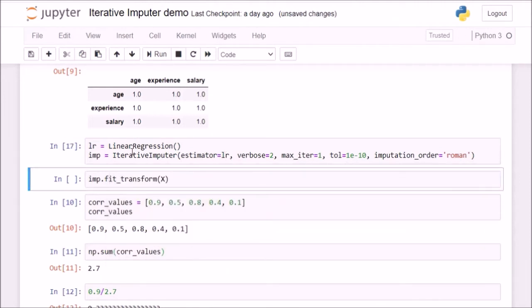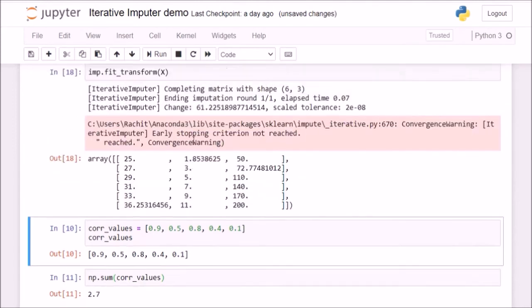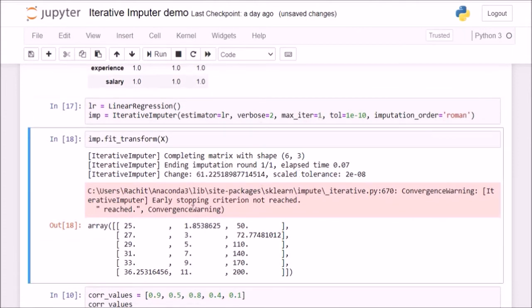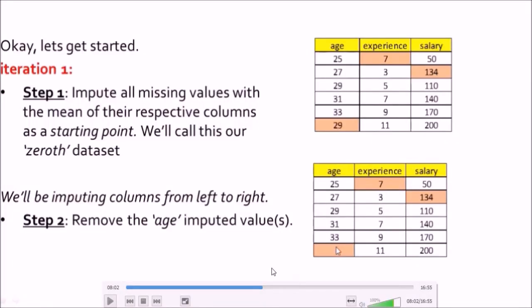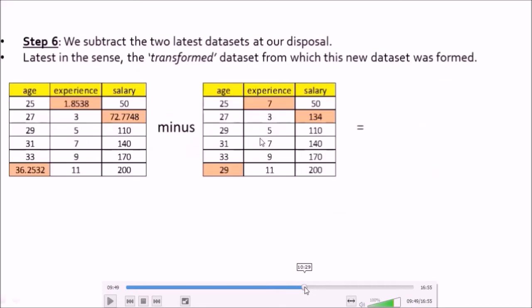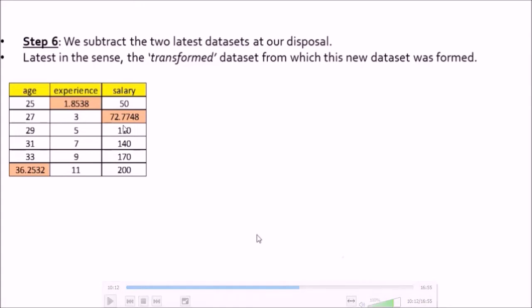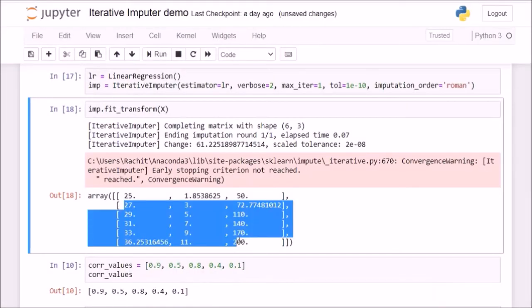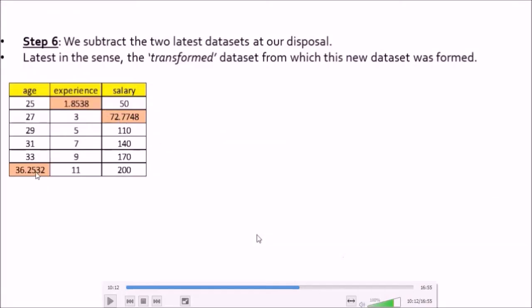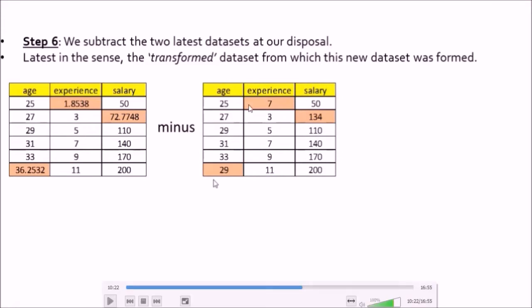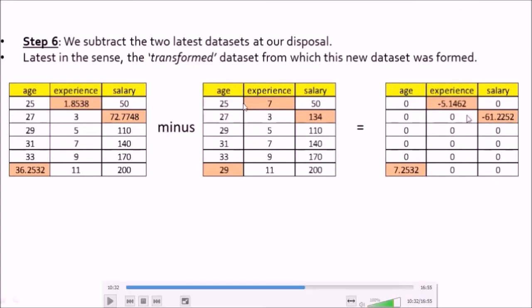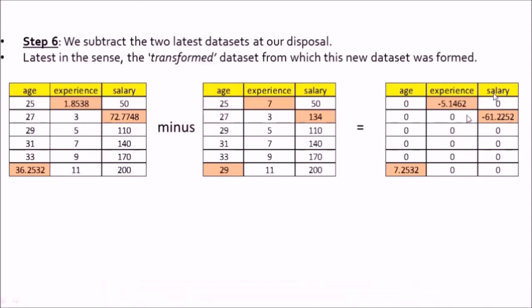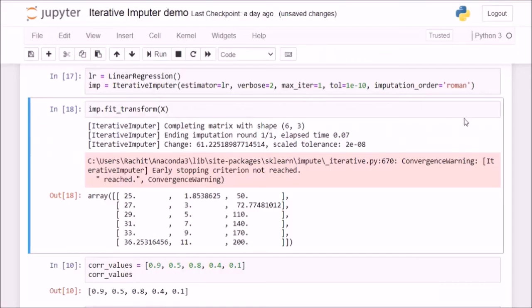Now I execute the imputer. Once I fit and transform the entire dataset, I have done only one iteration. After the first iteration we saw that the imputed values are 36.25, 1.85, and 72.77 — exactly matching what we saw in the algorithm lecture. Next, to compute the change, I subtract this dataset from the dataset from which it was formed — in our case, the original dataset with mean imputations. I take the absolute value of all differences and find the maximum, which is 61.22. This maximum change after one iteration is 61.22.